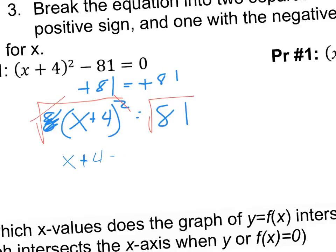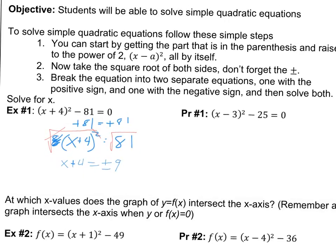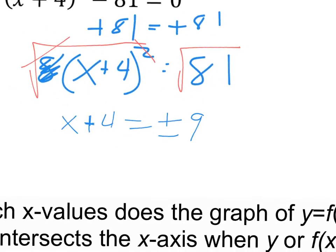So we just have x plus 4. On the right, we have the square root of 81, which is 9. But it's not just 9. It's plus or minus 9. That's what I mean by don't forget the plus or minus. All right. So now we're almost done. We just need to get the x all by itself. There's a couple different ways you can do this, but I think the easiest is for us to just go ahead and subtract 4 from each side.